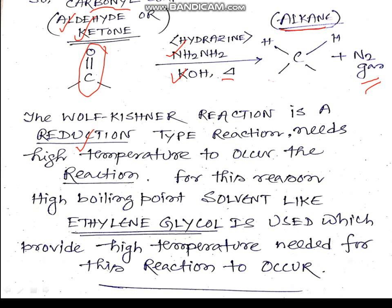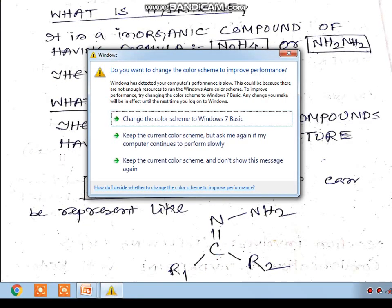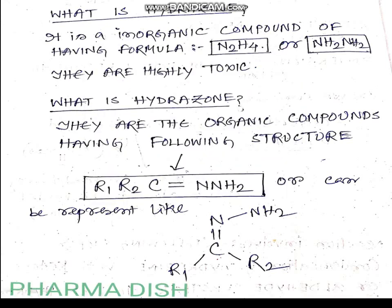For this reaction, we use a high boiling point solvent like ethylene glycol, which provides the high temperature needed for the reaction to occur. The reagent hydrazine is an inorganic compound with the formula N₂H₄ (also written as NH₂–NH₂). It is a very toxic compound.